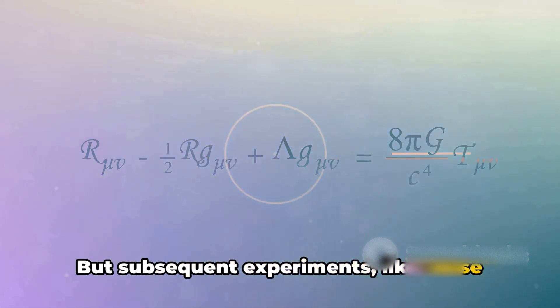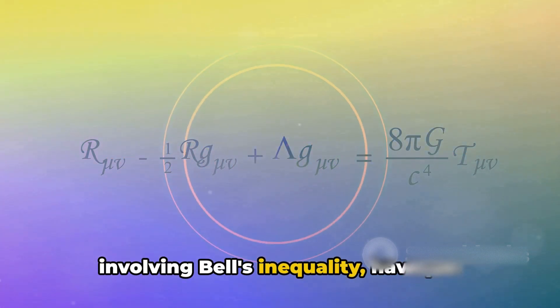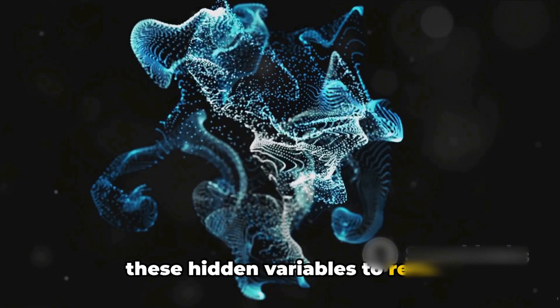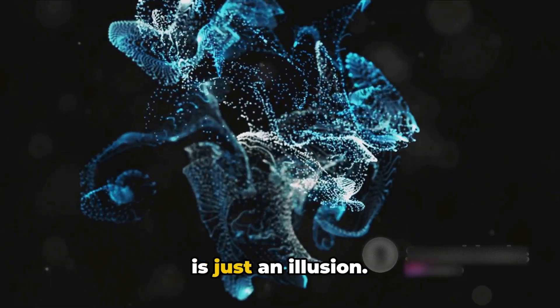But subsequent experiments, like those involving Bell's inequality, have put these hidden variables to rest. In the quantum realm, it seems distance is just an illusion.